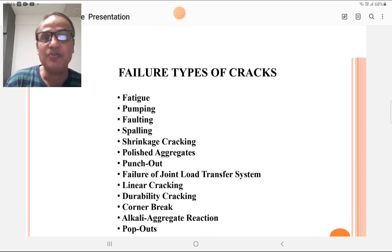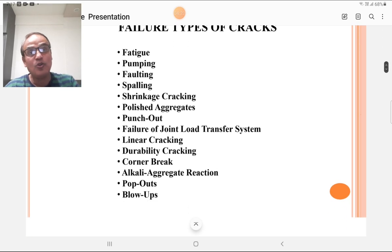Different types of cracks and failures of concrete pavement include: fatigue crack, pumping, faulting, spalling, shrinkage cracking, polished aggregate, punch out, failure of joint load transfer system, linear cracking, durability cracking, corner break, alkali aggregate reaction, pop outs, and blow ups. These are the various types of failures in concrete pavement. We already discussed these failures in our previous lectures, but we have to study the stitching of concrete, so I am revising these failures.